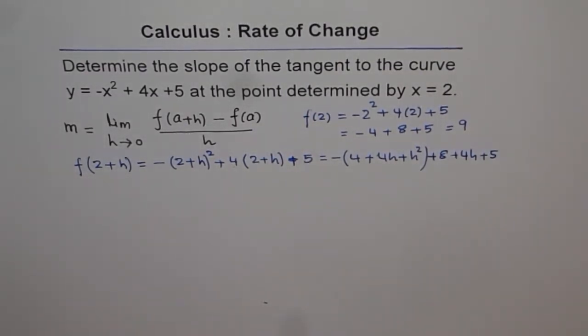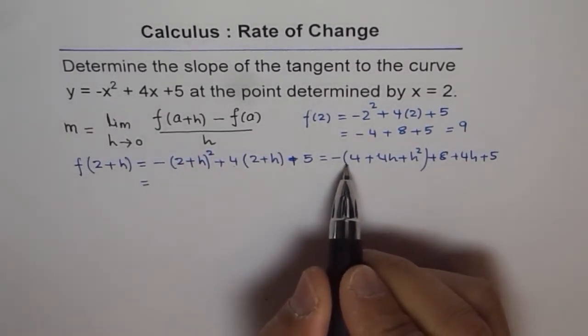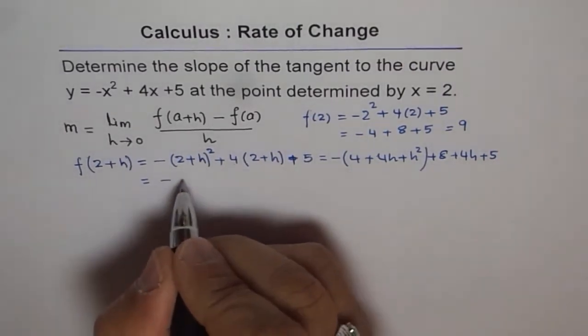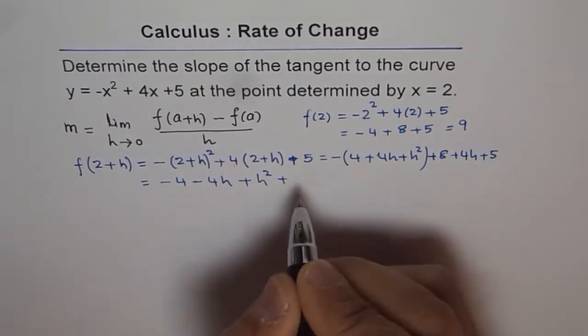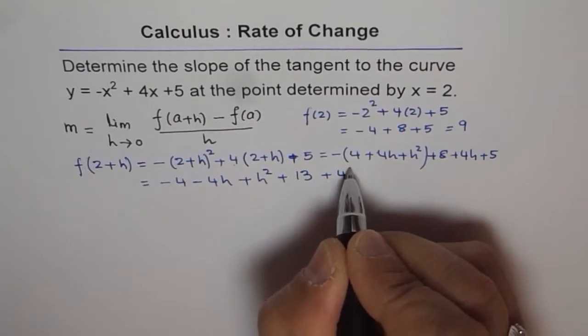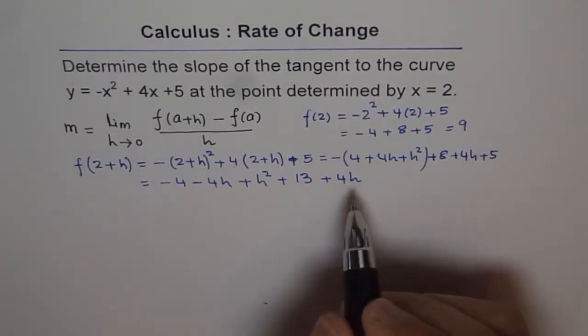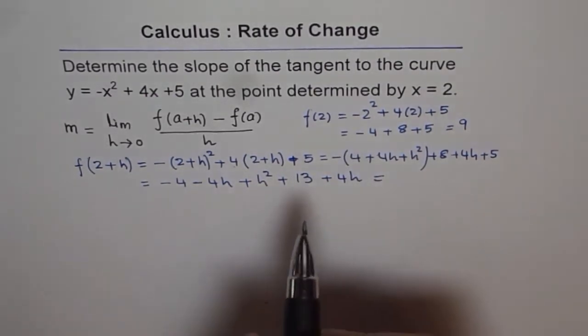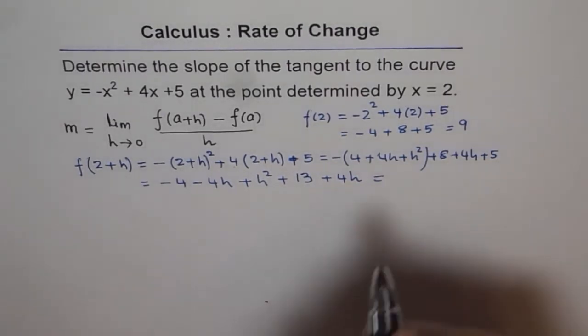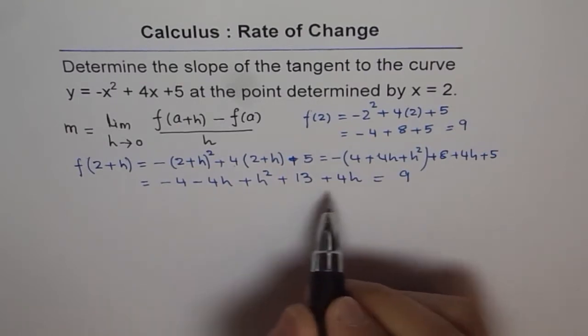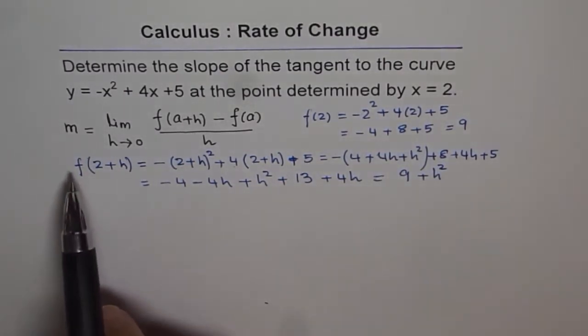Let's simplify f(2+h) by collecting all the terms together. We have -4 - 4h - h² + 8 + 5 + 4h. Combining terms: -4 + 8 + 5 = 9, and -4h + 4h = 0, plus h². So we get 9 + h².